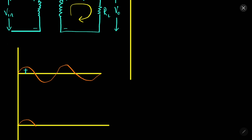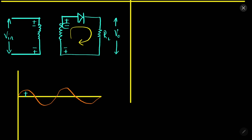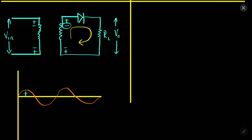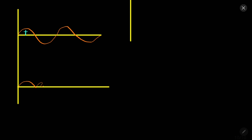Now what happens if the diode gets the negative cycle? In the negative cycle, the upper terminal will be negative and the lower terminal will be positive. So the p-type will be in contact with the negative terminal and the n-type will be in contact with the positive terminal — so it will become reverse bias. In reverse bias we know that there will not be any current, so in the negative cycle no current will flow.